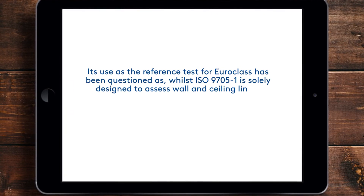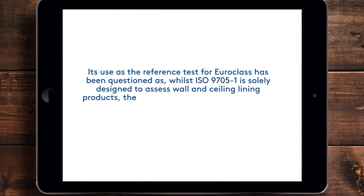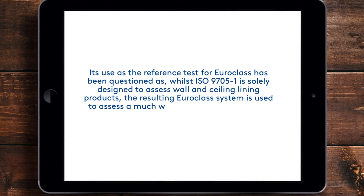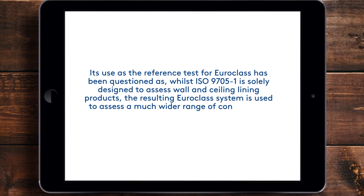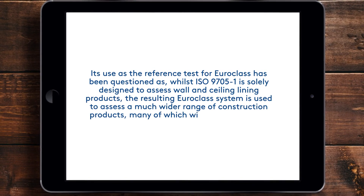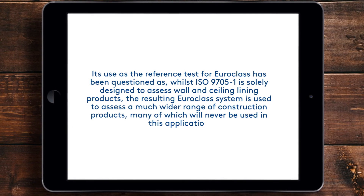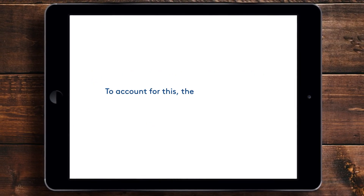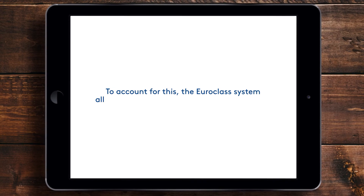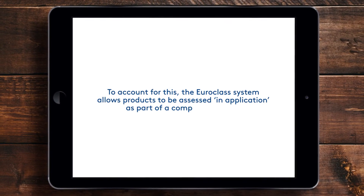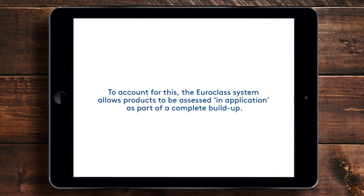Its use as a reference test for Euro Class has been questioned, as whilst ISO 9705 Part 1 is solely designed to assess wall and ceiling lining products, the resulting Euro Class system is used to assess a much wider range of construction products, many of which will never be used in this application.